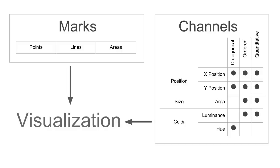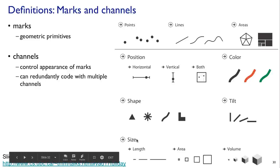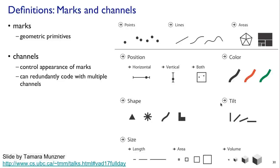This taxonomy of channels is a simplified version just to explain the concepts. I want to present this slide by Tamara Munzner on marks and channels to give a sense that there is in fact a more detailed taxonomy. In this taxonomy, channels include position — horizontal, vertical, and both — shape, and size, which is subdivided into length, area, and volume. There's also color and tilt as another channel, though tilt is not really used that much.